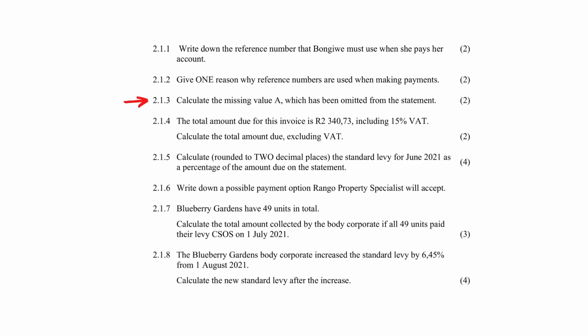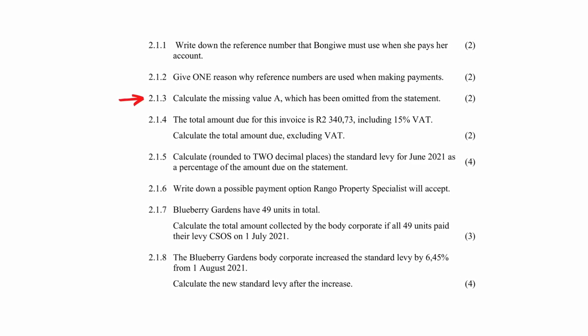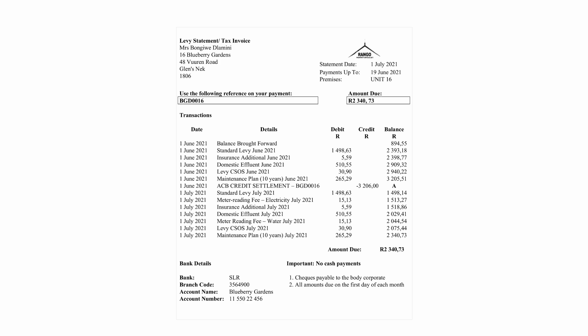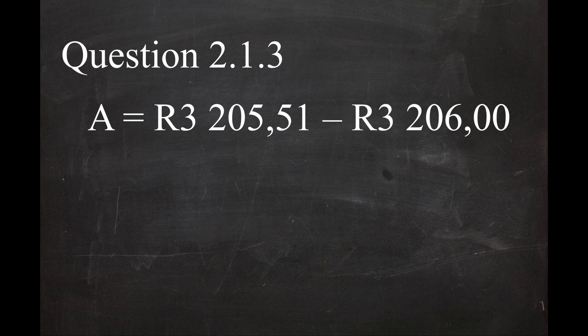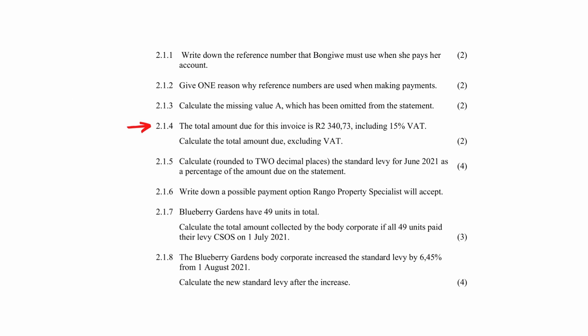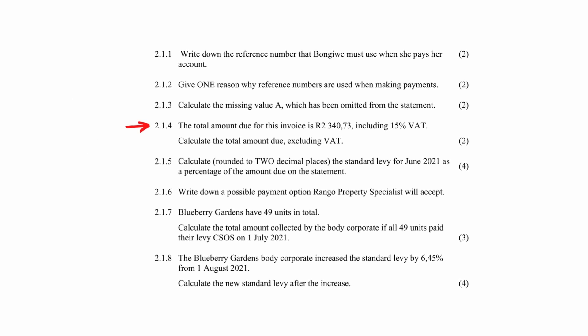In Question 2.1.3, you have to calculate the missing value A that has been left out of the statement. Since credits are considered negative values, you have to find the difference between the previous balance and the payment amount made. The new balance A is R3205.51 minus R3206.00, and this equals a negative value of R0.49. The negative sign is important — it means the person overpaid and the body corporate now owes the client R0.49.